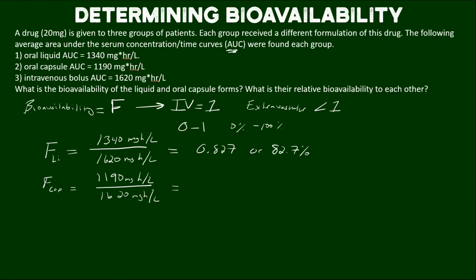Let's do the same with the capsule. If we do that math we get 73.5%, so the capsule is less bioavailable compared to the liquid. Therefore, if we want to figure out what their relative bioavailability is to each other, we can do that by setting up a ratio of those two AUCs.